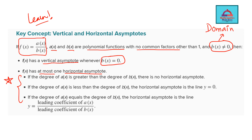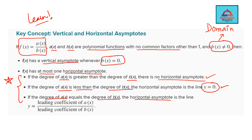Now for horizontal asymptote: a function has at most one horizontal asymptote. You must remember these conditions. If the degree of the numerator is greater than the denominator, there is no horizontal asymptote. If the degree of the numerator is less than the degree of the denominator, the horizontal asymptote is y = 0. In the third case where the degree of ax equals the degree of bx, the horizontal asymptote is the line y equals the leading coefficient of the numerator divided by the leading coefficient of the denominator. Let's now apply this to the questions.